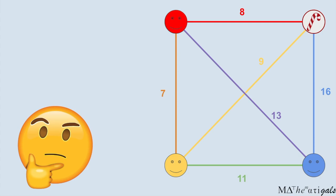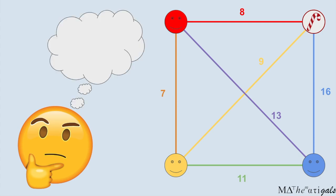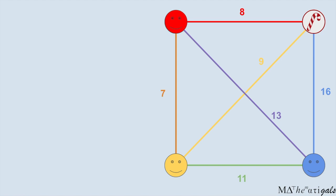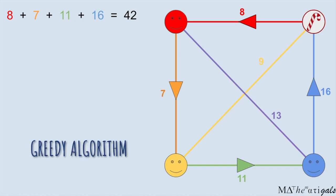You might think that Santa would choose to first go to the child closest to the North Pole, and then always choose the child closest to his current location that he hasn't already delivered presents to. In this case, we would go to red, then yellow, then blue, and back to the North Pole. This method of finding a solution is called the greedy algorithm.